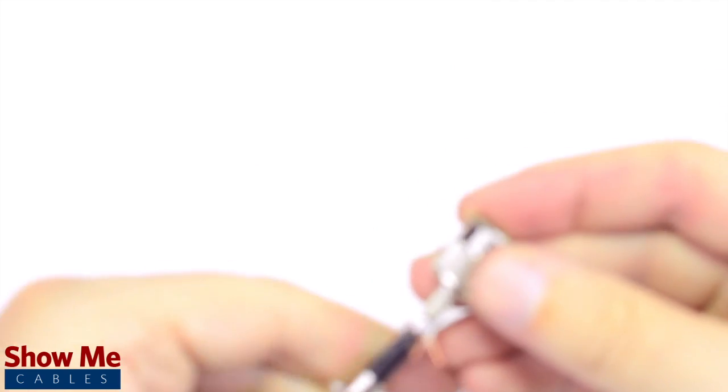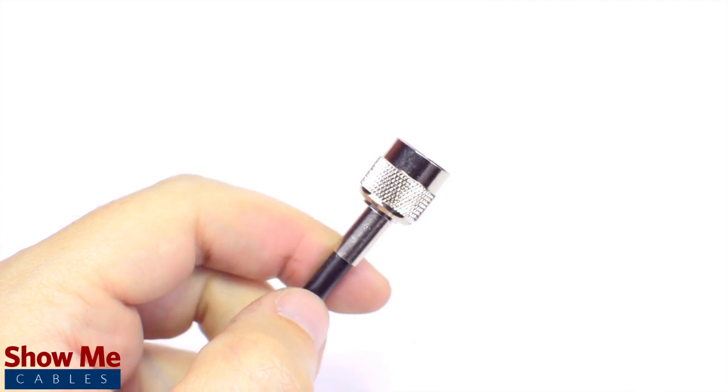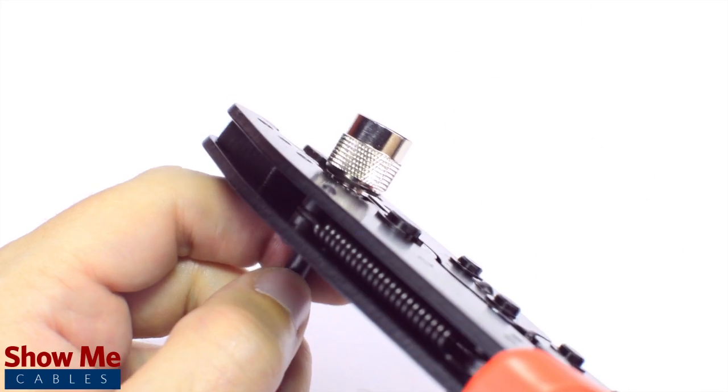Then slide the ferrule up to the base of the connector, folding the shield with it. Crimp the ferrule under the outer jacket to complete termination.